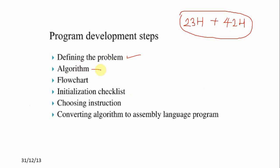The second step is the algorithm. An algorithm is nothing but a step-by-step procedure written in general English language for solving a problem. It is a step-by-step method or statement written in general English language to solve a problem. This is called the algorithm.